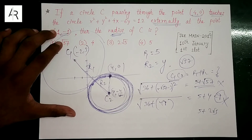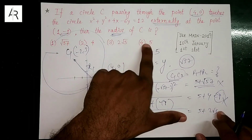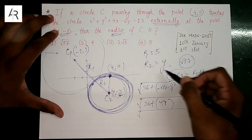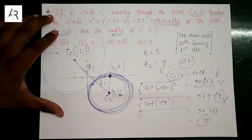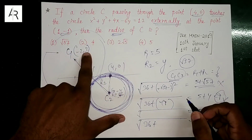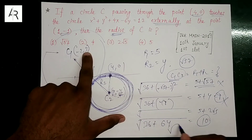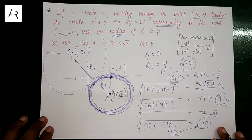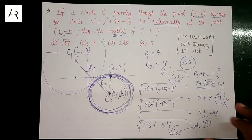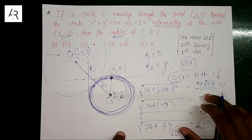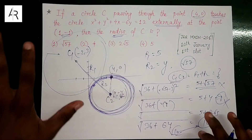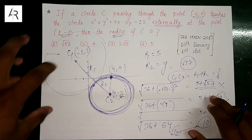Now check y = 2√5: center is (4, −2√5), r1 + r2 = 5 + 2√5. Then check y = 5: r1 + r2 = 5 + 5 = 10. C1C2 = root of ((4−(−2))² + (−5−3)²) = root of (36 + 64) = root of 100 = 10. This equals r1 + r2 = 10. So this is our proof — the fourth option (radius = 5) is correct.